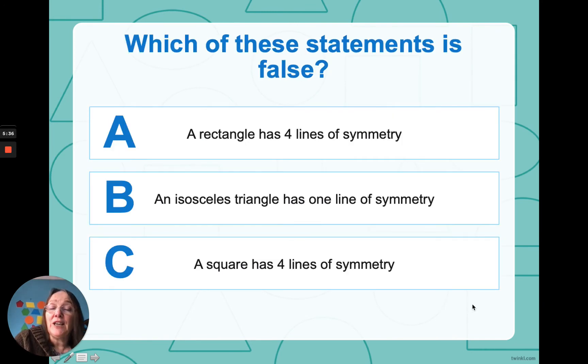Which of these statements is false? Firstly, a rectangle has four lines of symmetry. An isosceles triangle has one line of symmetry. And a square has four lines of symmetry. Well, I'm pretty sure we've seen that isosceles triangle and it had one line of symmetry. I know we've had a look at the square and that had four lines of symmetry.